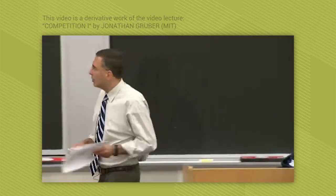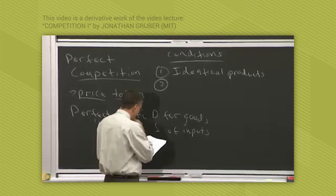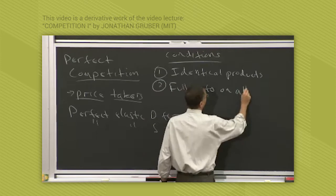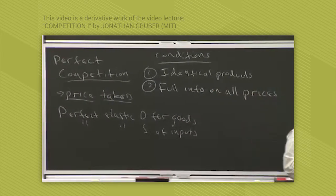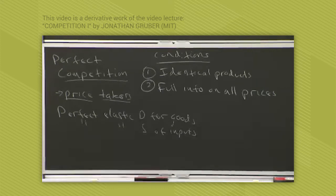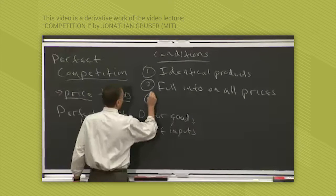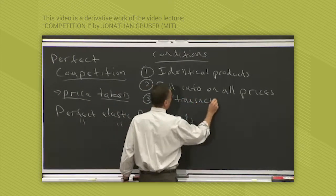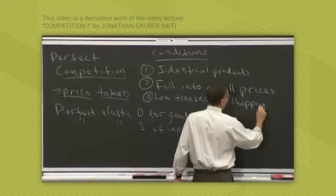Second of all, consumers have to have full information on all prices. That is perfect competition. And the third is low transaction or shopping costs.